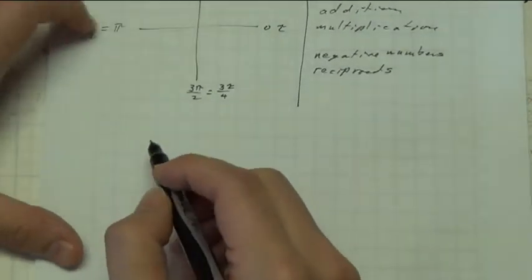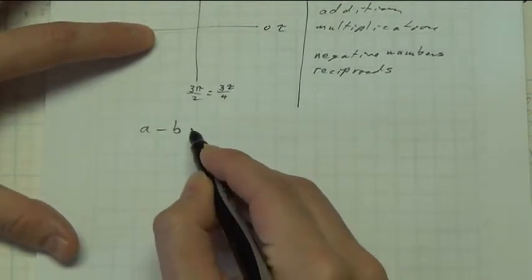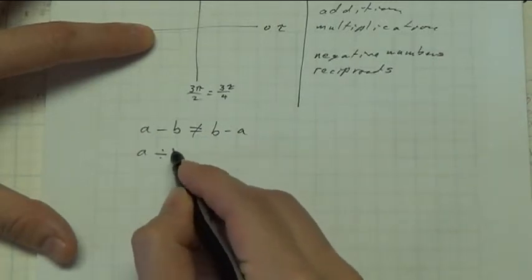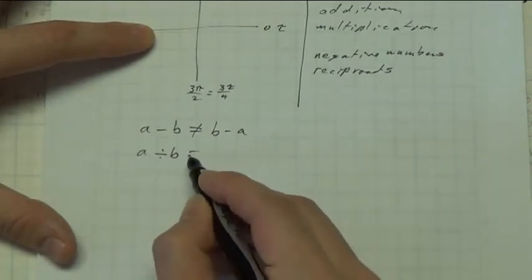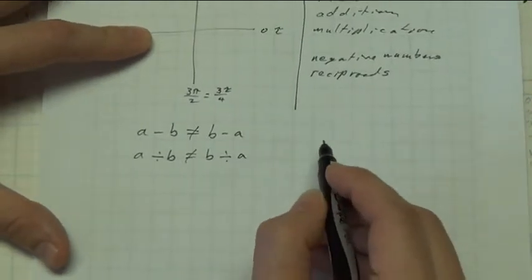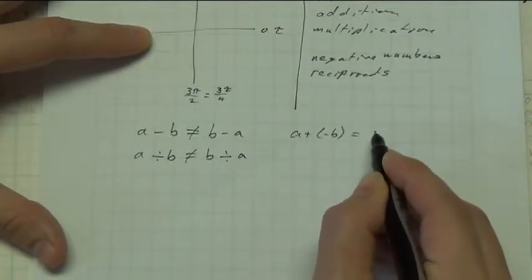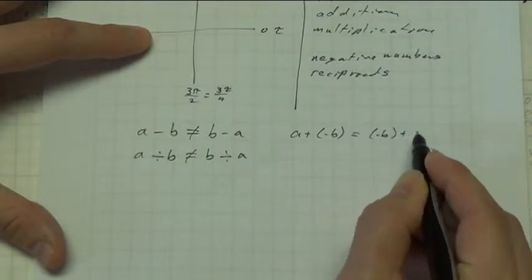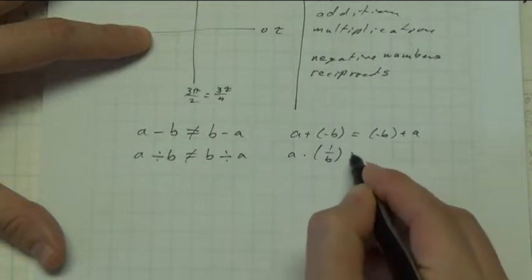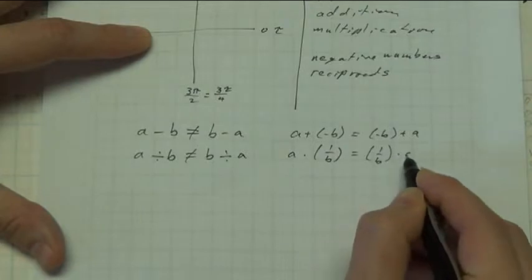What gets me about subtraction and division is that they're confusing. You take A minus B, and that's not the same thing as B minus A. A divided by B, I hate that symbol by the way, is not the same thing as B divided by A. But if we use negatives and reciprocals, we get A plus negative B is negative B plus A. A times the reciprocal of B is the same thing as the reciprocal of B times A.